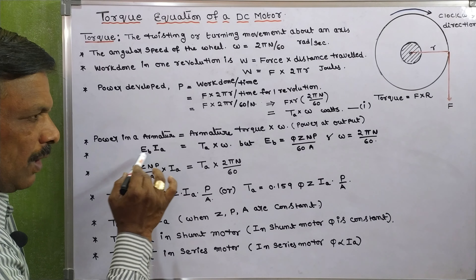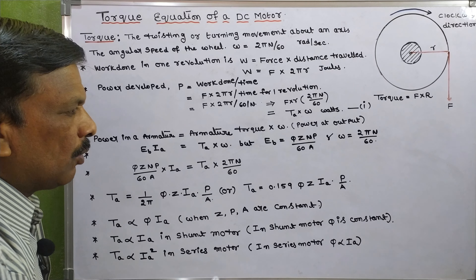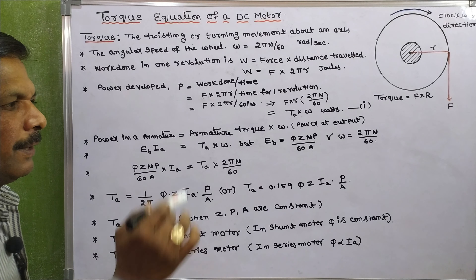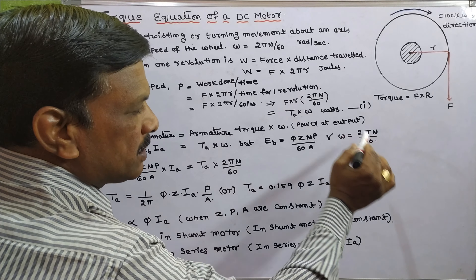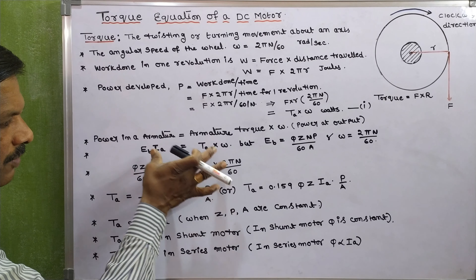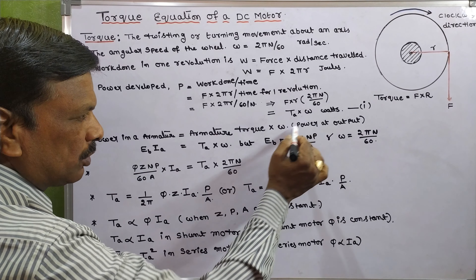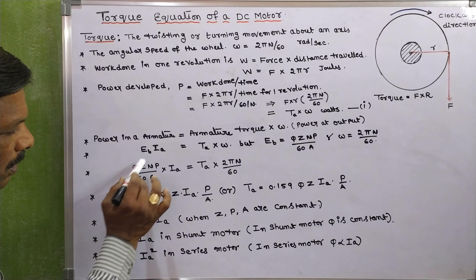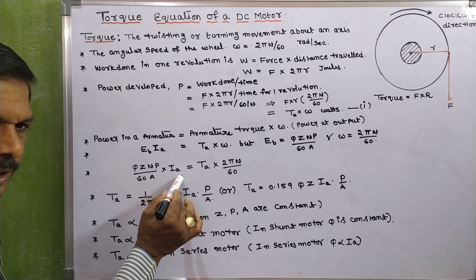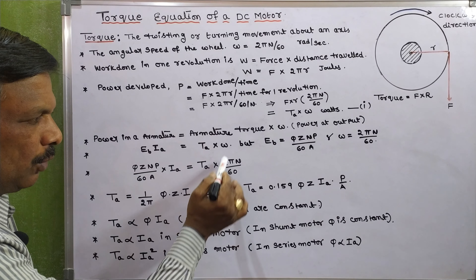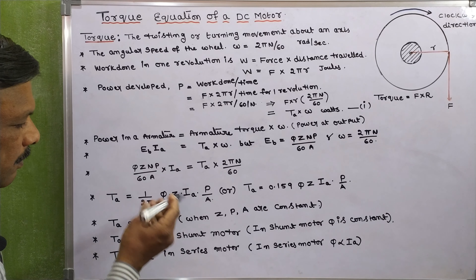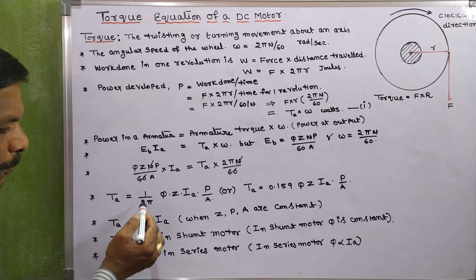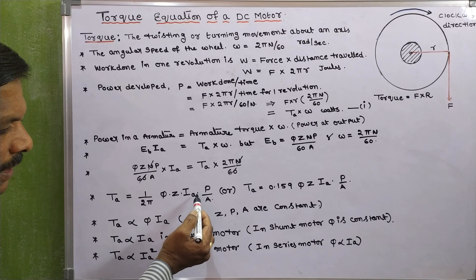Now, E_B equals back EMF, and we know the equation for back EMF: E_B = φZNP / 60A. And omega = 2πN/60. Substituting these two into the equation: φZNP/60A into I_A equals armature torque into 2πN/60. The 60 and N cancel on both sides, and finally we get armature torque T_A equals (1/2π) · φ · Z · I_A · (P/A).